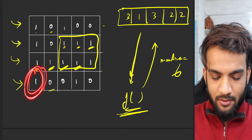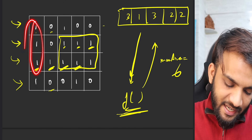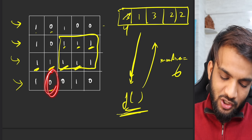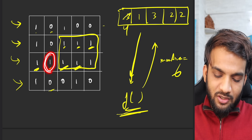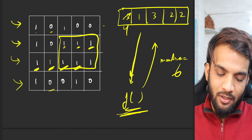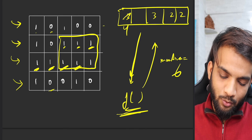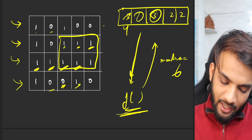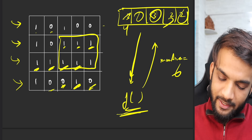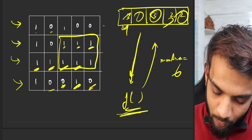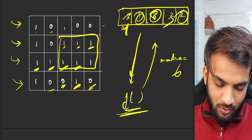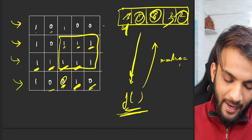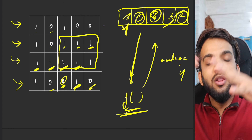Moving to the last column: the previous height was three, and adding one makes it four. But where there's a zero, the height resets to zero. So the final heights are 4, 0, 0, 3, 0. Passing this to the function gives max area of four.